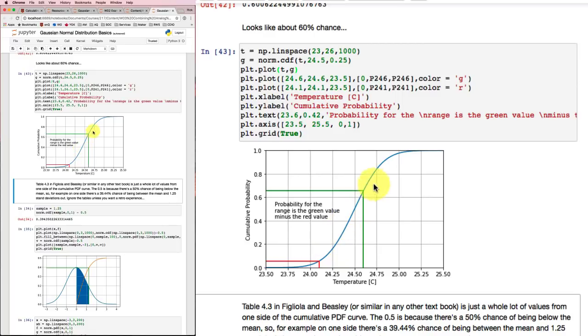And the mean is in here at 24.5. There's 50% of the probability is below the mean. 50% is above the mean. So that makes sense.